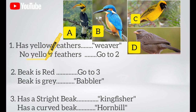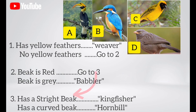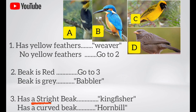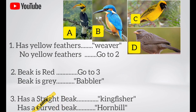If no, go to statement two. In statement two, if the beak is red in color, go to statement three; if not, and the beak is gray in color, it is a babbler bird. In statement three, if the bird has a straight beak it is a kingfisher bird; if the bird has a curved beak it is a hornbill bird.